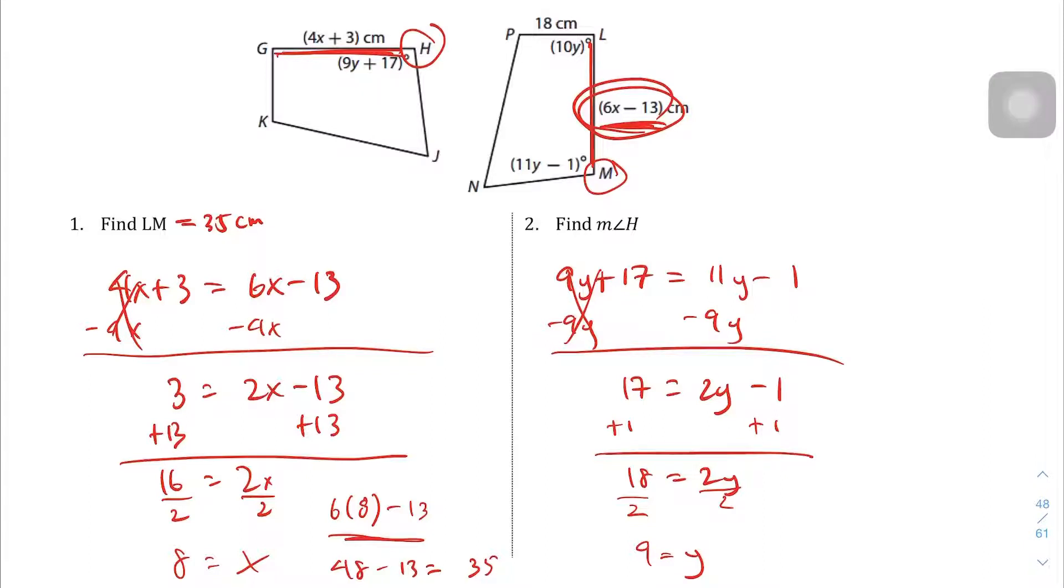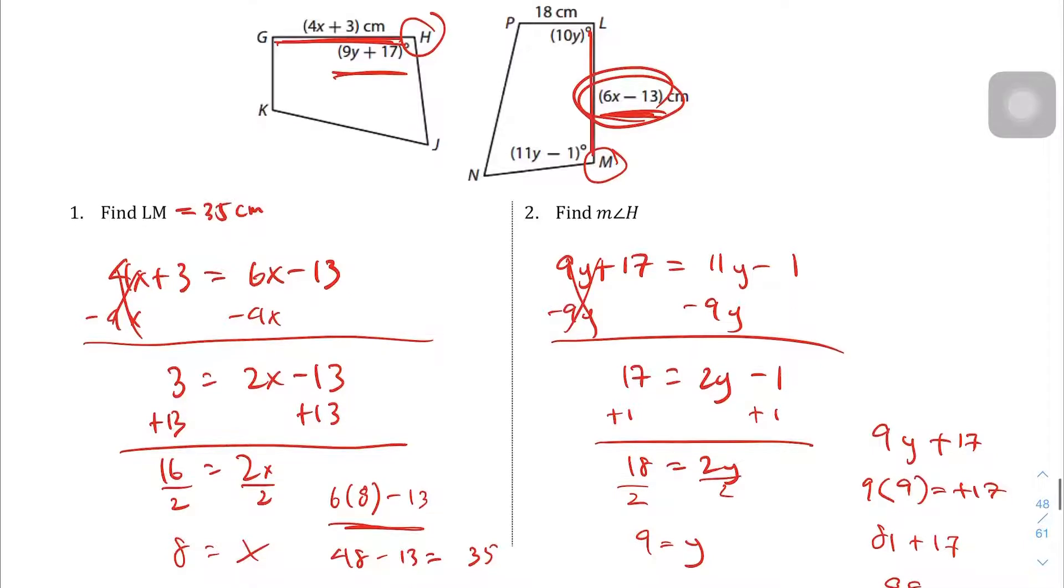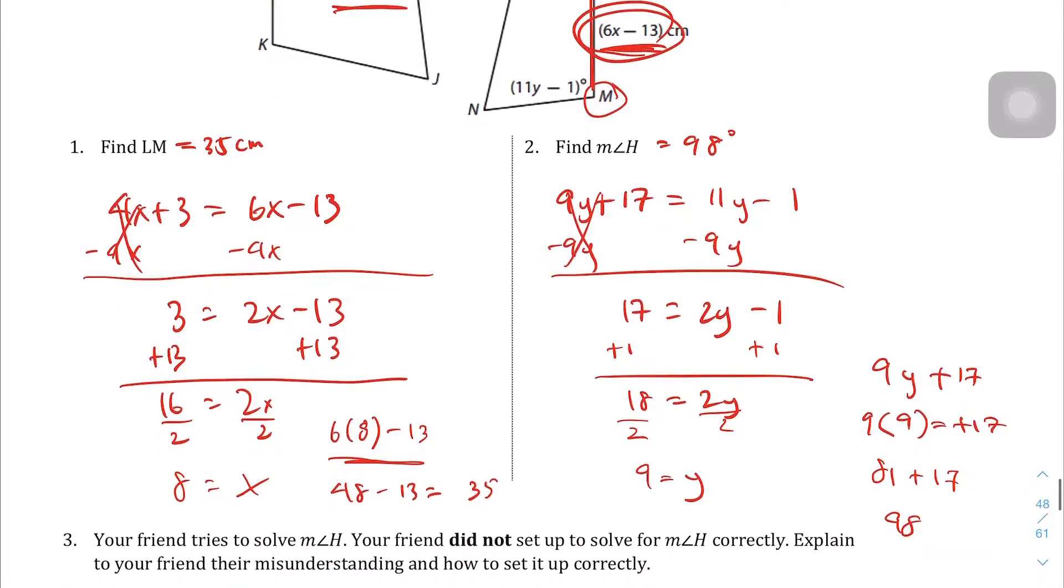Again, we're not done yet. We've got to plug it back in. I want to find H. So I'm going to take the expression we are given for H, which is 9y plus 17. Instead of the 9, I'm going to plug in another 9, since we're told y equals 9. 9 times 9 is 81 plus 17, which gives us 98. So the measurement of angle H is 98 degrees, which was a boy band that was very popular in the early 2000s, but I might be dating myself.